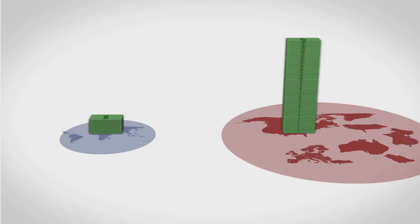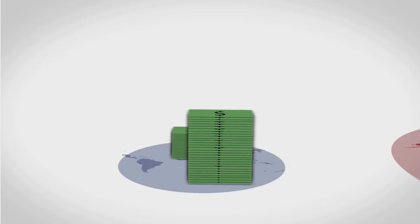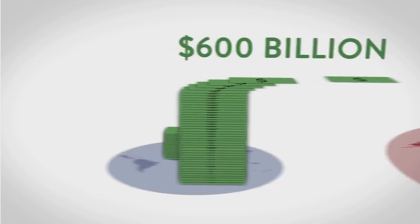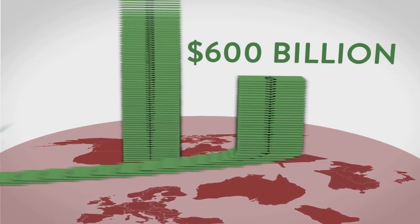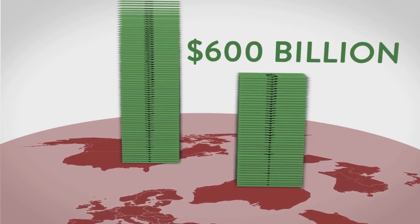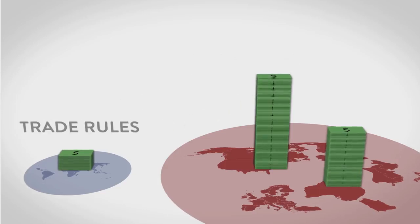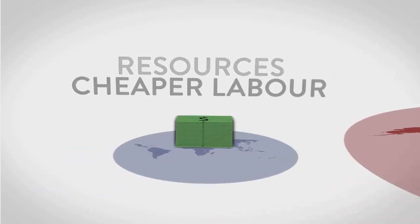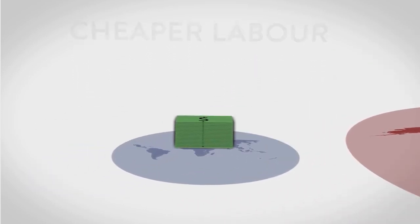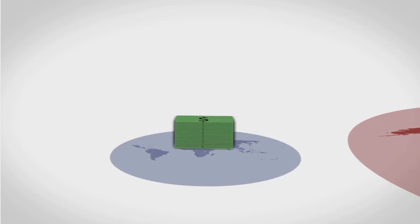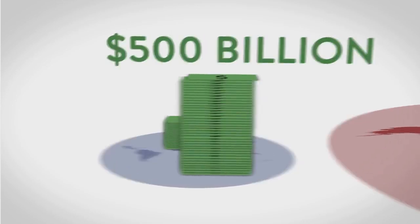On top of this, each year poor countries are paying about 600 billion dollars in debt service to rich countries on loans that have already been paid off many times over. And then there's the money that poor countries lose from trade rules imposed by rich countries to get access to more resources and cheaper labor.